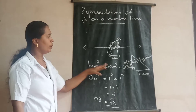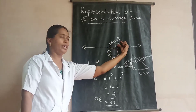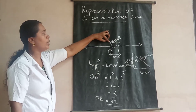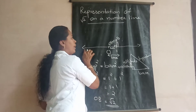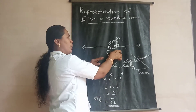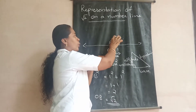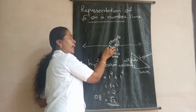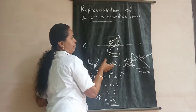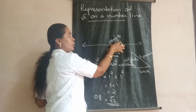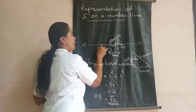Hypotenuse squared equals base squared plus altitude squared. We have taken 1 unit as base and 1 unit as altitude, so the length OB equals root 2. The question is to represent root 2 on the number line. Now root 2 is the length of this line OB. So take your compass, keep the needle at O, and take OB as radius. With O as center and OB as radius, draw an arc. This arc touches the number line on both sides: positive root 2 on the right and negative root 2 on the left.